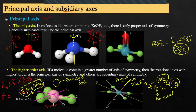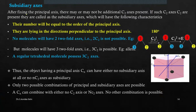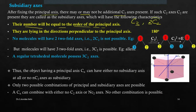For XeF4, four-fold axis of symmetry is the principal axis. We have four C2s, but the C2 contained within C4 is not taken as a separate subsidiary axis. After fixing the principal axis, there may or may not be additional C2 axes. If such C2 axes are present, they are called subsidiary axes, and their number will be equal to the order of the principal axis. So for C3 as principal axis, how many C2s? Three — equal to the order of the principal axis.